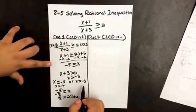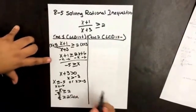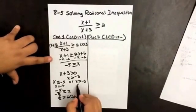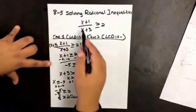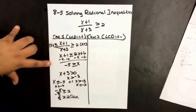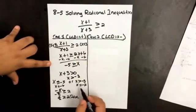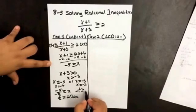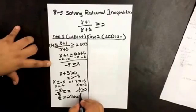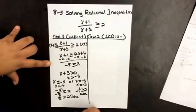What about x greater than negative 3? We test x equals negative 2. When we plug it back into our inequality, we will get 1 over negative 1. Is that greater than 2? No, that's false. So then that's not an answer.